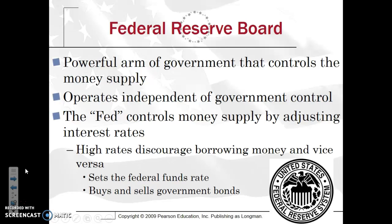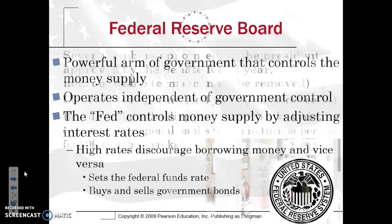Who has the power to do this? It's really the Federal Reserve Board — a very powerful arm of the government that is in control of monetary policy, namely the amount of money in circulation. The Federal Reserve Board operates independent of government control. Known collectively as the Fed, it controls money supply by adjusting interest rates. When interest rates are lower, this allows for more borrowing; when rates are higher, it discourages borrowing because money is more expensive. The Fed also sets the federal funds rate and buys and sells government bonds.